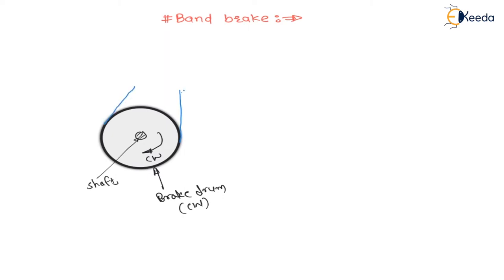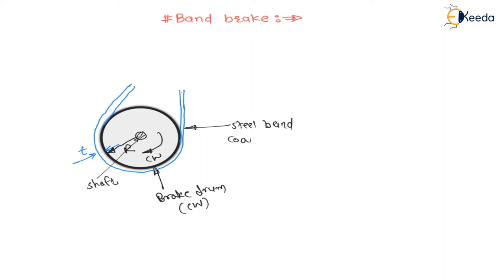This band has a thickness t. The radius of the brake drum is r. This is a steel band coated with friction lining, or friction material.